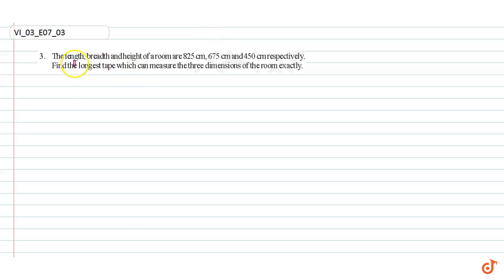In this question, it is given that the length, breadth, and height of a room are 825 cm, 675 cm, and 450 cm respectively. Find the longest tape which can measure the three dimensions of the room exactly.